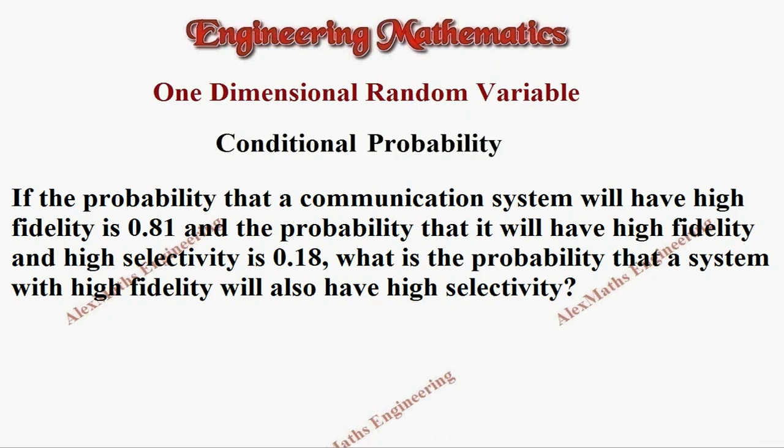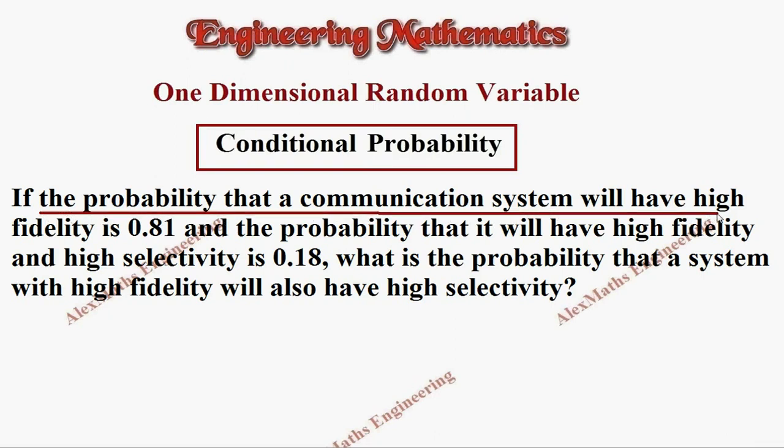Hi students, this is Alex. In this video we are going to solve a problem from conditional probability. It is given that the probability that a communication system will have high fidelity is 0.81. Let's take E as the event which is having high fidelity, so as per the question, P of E is given as 0.81.